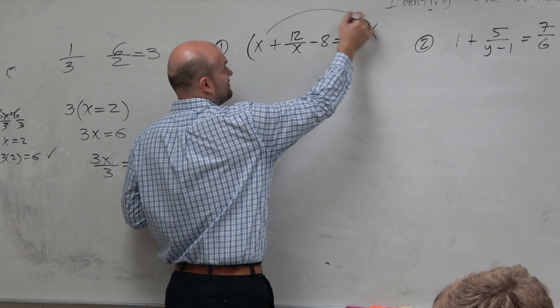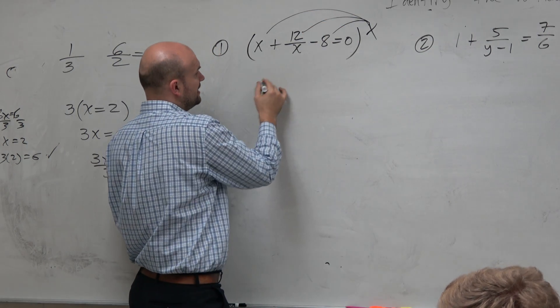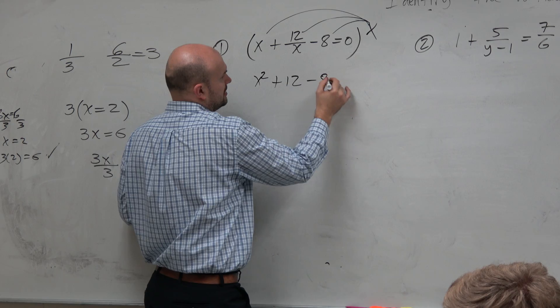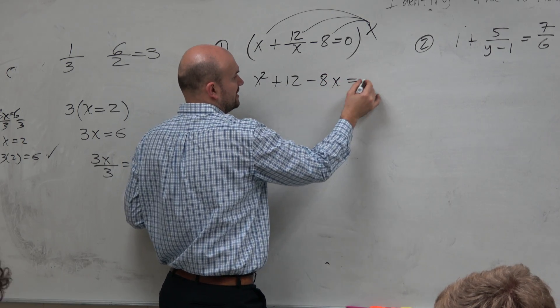So if I multiply x times everything, I get x squared plus 12 minus 8x equals 0.